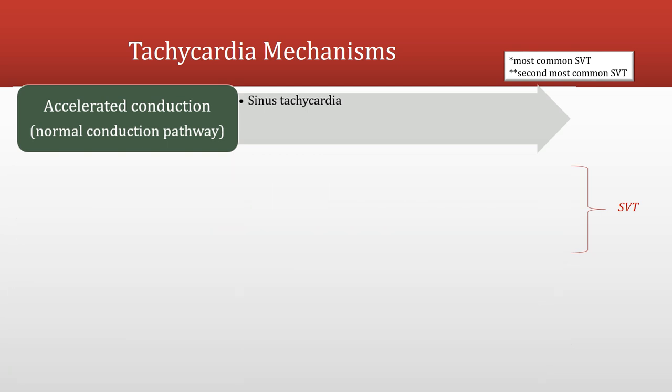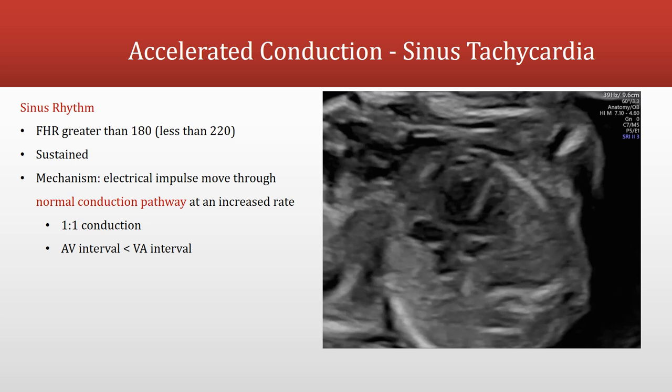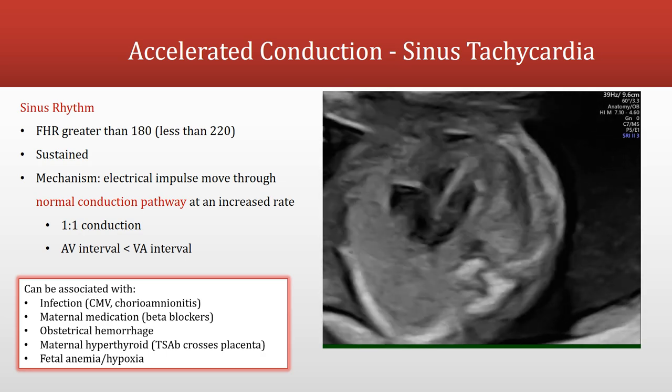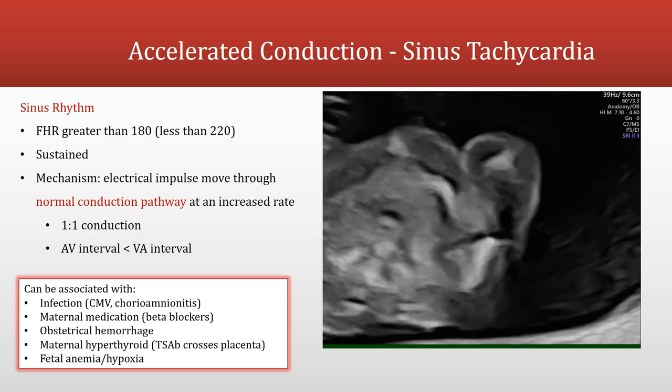In sinus tachycardia, fetal heart rate is greater than 180 beats per minute but usually remains less than 220 beats per minute. It is sustained, and the mechanism is that electrical impulses still move through the normal conduction pathway, just at an increased rate. That means you still have one-to-one conduction and the normal relationship of the AV interval shorter than the VA interval. It can be associated with infection, maternal medication, obstetrical hemorrhage, maternal hyperthyroid, and fetal anemia.